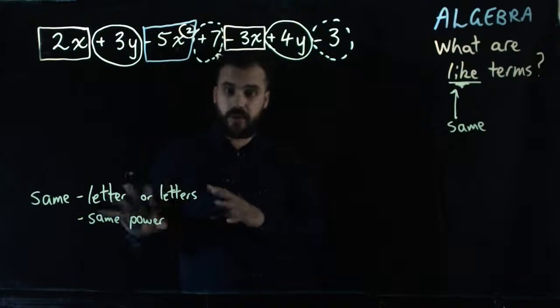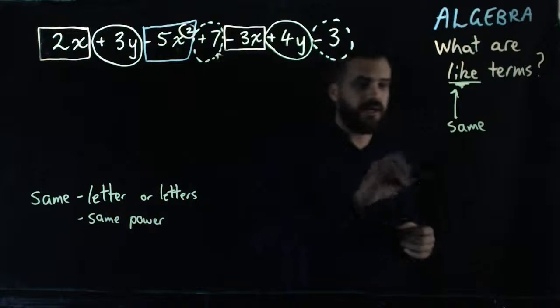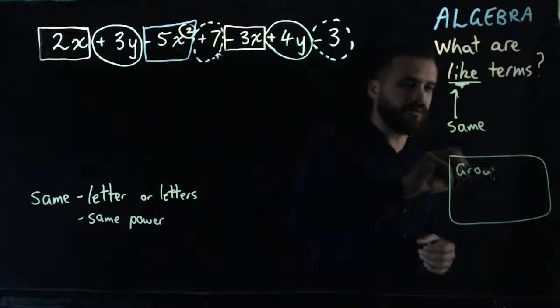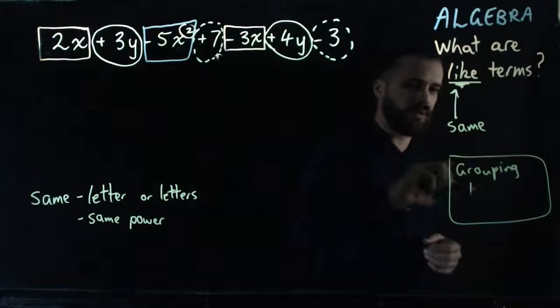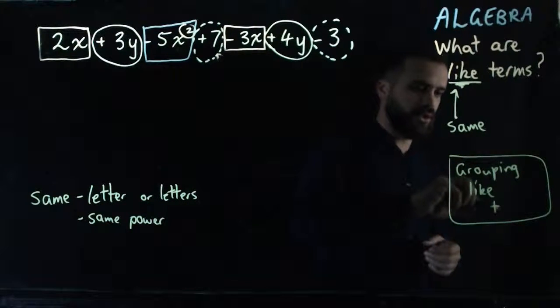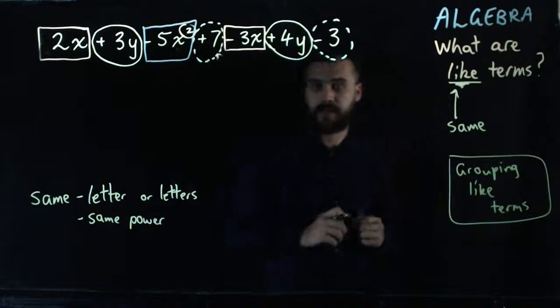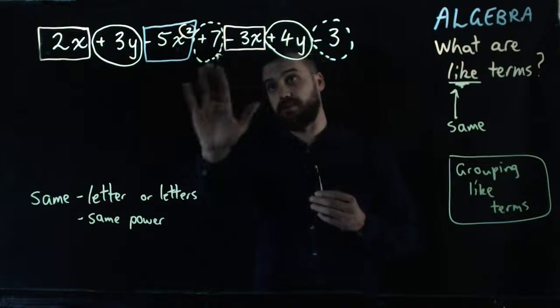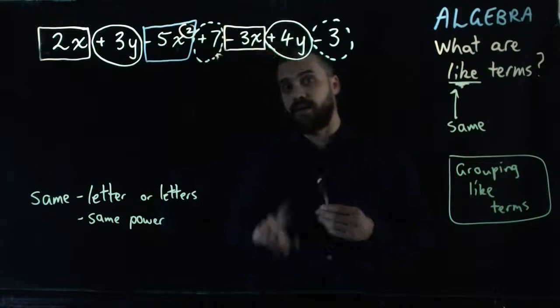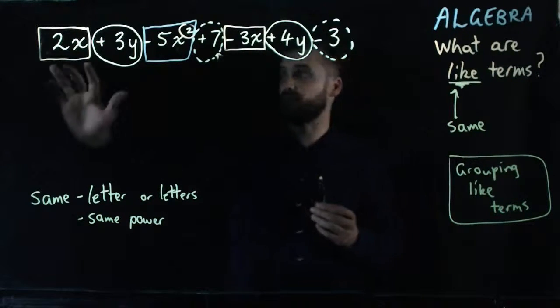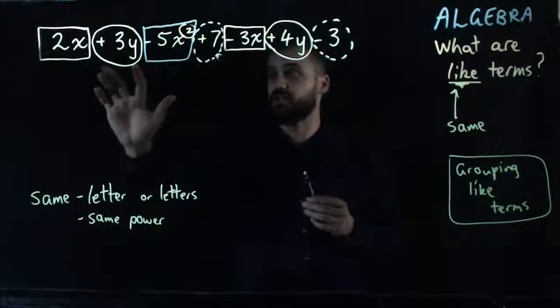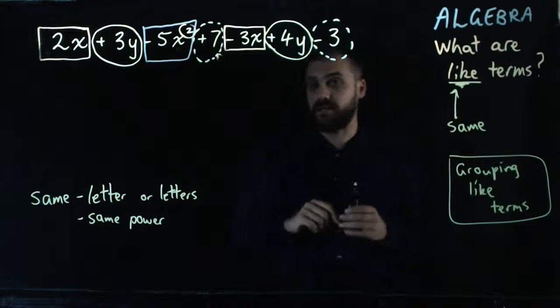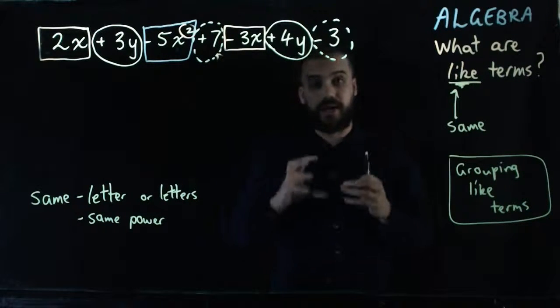Now that I know what like terms are, I'm going to spend some time, and this is something your teacher will use a lot, grouping like terms. Grouping them. So if you look up here, we have a bunch of terms. It's no mistake that I've put a square around these ones and a circle around these ones and a dotted circle around those ones, because they're like terms.